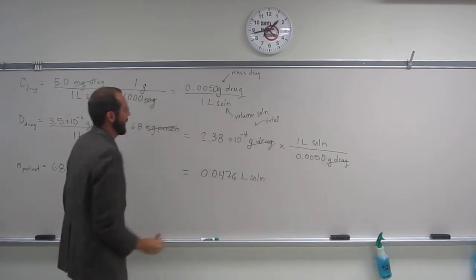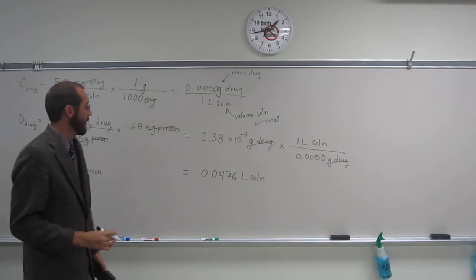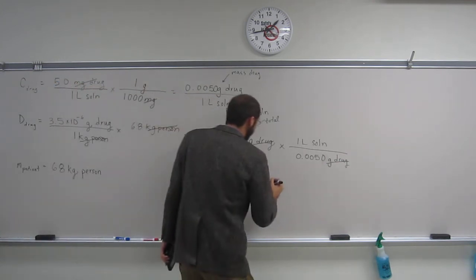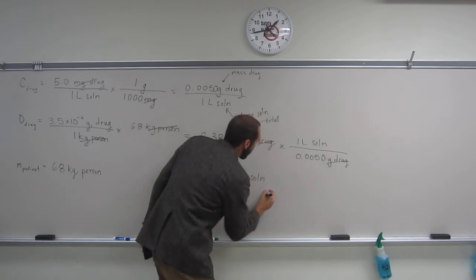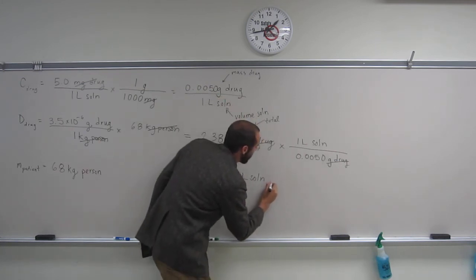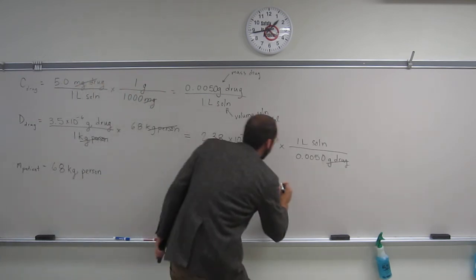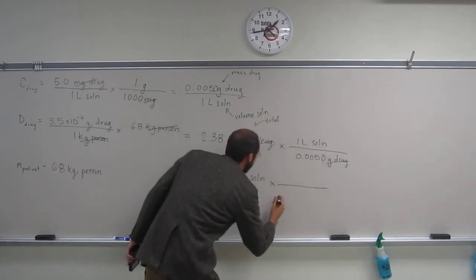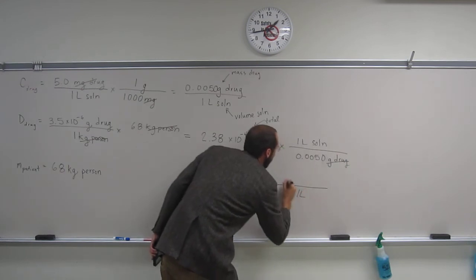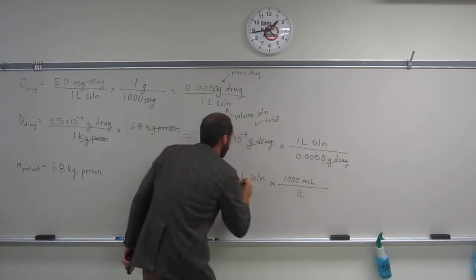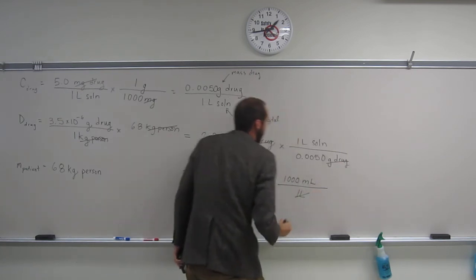Of course, liters is not a very good unit to be applying to the patient, right? So we're going to put it into milliliters, something that's more recognizable in your syringe and whatnot. So, how do we do that? We're just going to convert, of course. 1 liter, 1,000 milliliters. Cancel, cancel.